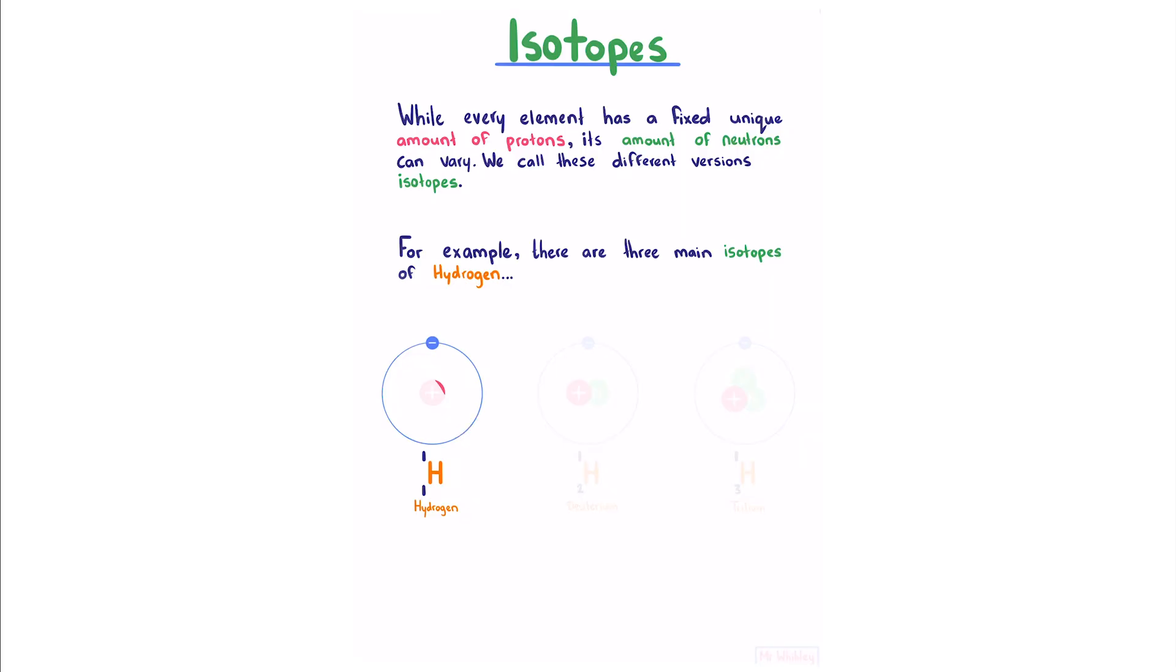Hydrogen-1 with an atomic mass of 1. Hydrogen-2 where we add a neutron, giving us an atomic mass of 2. And hydrogen-3, which adds a further neutron, to give us an atomic mass of 3.